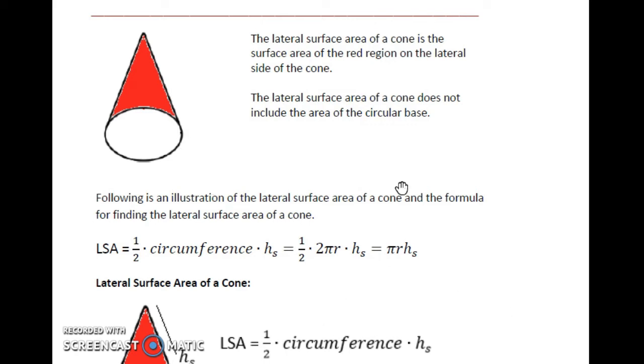Following is an illustration of the lateral surface area of the cone and the formula for finding the lateral surface area of a cone. So lateral surface area is half circumference of the circle, which represents one side, times the height, that slant height. HS is for slant height.